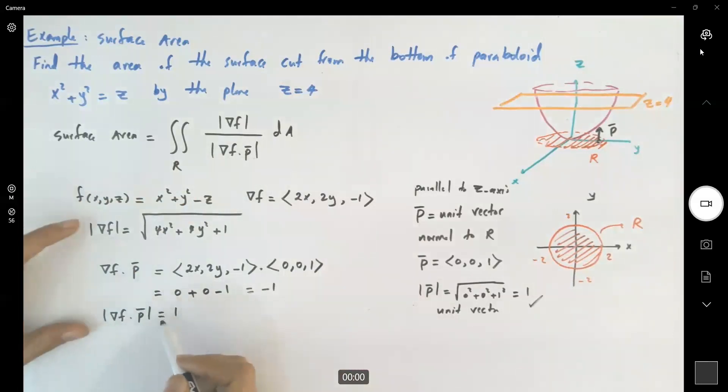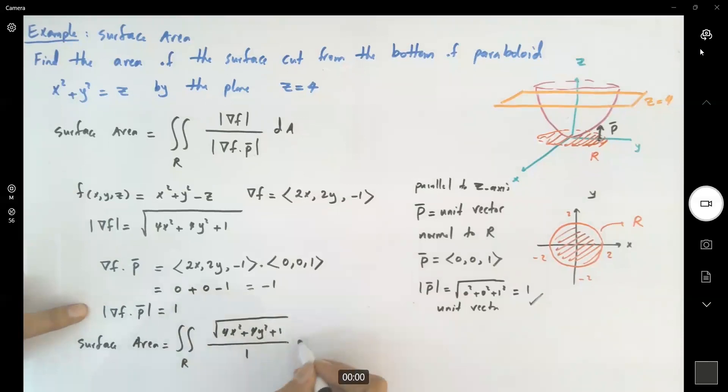The surface area is equal to the double integral over region r. The magnitude of gradient of f is square root of 4x squared plus 4y squared plus 1 divided by 1, dA. The rest is just going back to double integral, and in the calculation, here you can use polar coordinates.